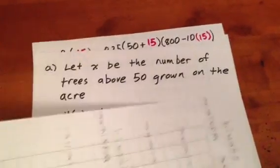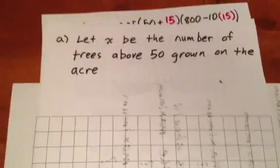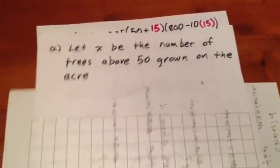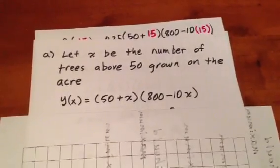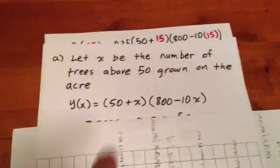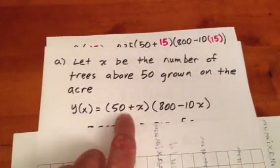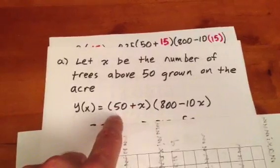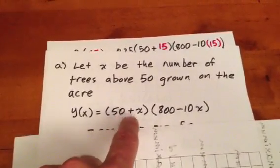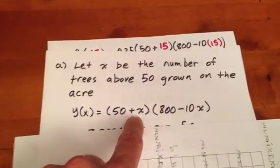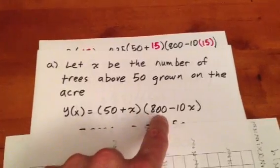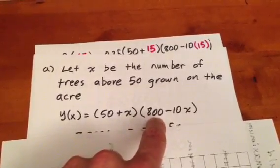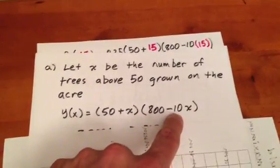We begin by letting X be the number of trees above 50 grown on the acre. What we then get is that our yield is going to be the number of trees times the number of apples on a tree. So she begins with 50 trees and then grows a certain number of trees above that. She also begins with 800 apples on each tree and loses 10 for every tree that she grows.